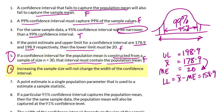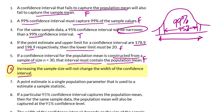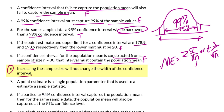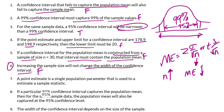Number 6: Increasing the sample size will not change the width of the confidence interval. The width depends on the margin of error. The margin of error is Z·σ/√n or T·s/√n. In both cases, as the sample size increases, the margin of error will decrease because they are inversely proportional. So increasing the sample size will definitely change the width of the confidence interval. That is a false statement.